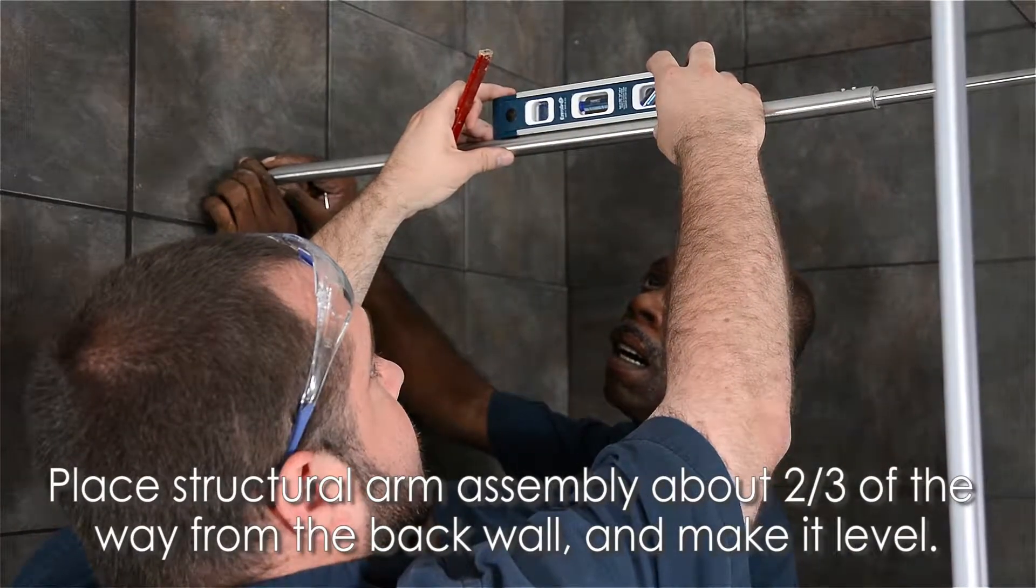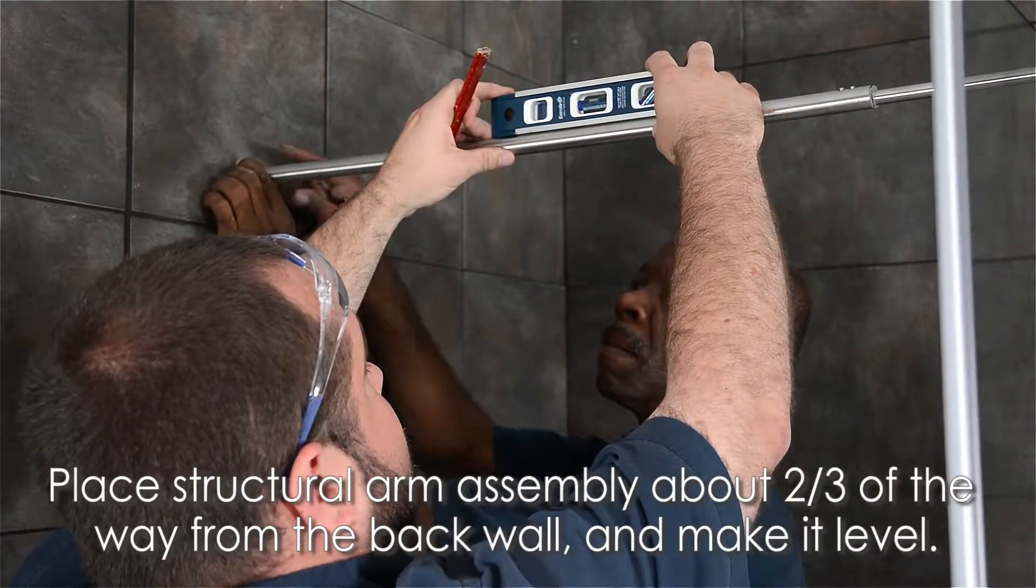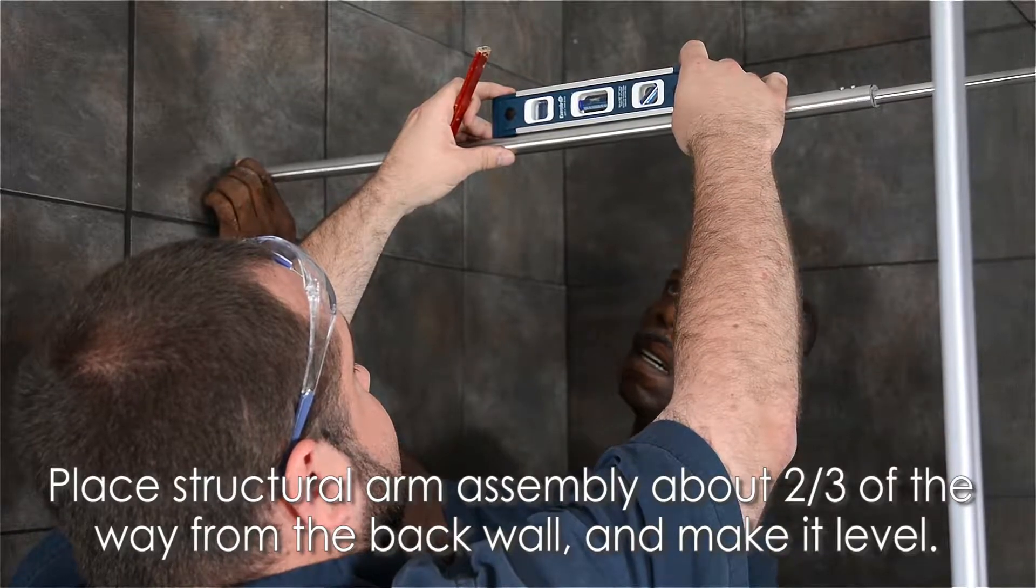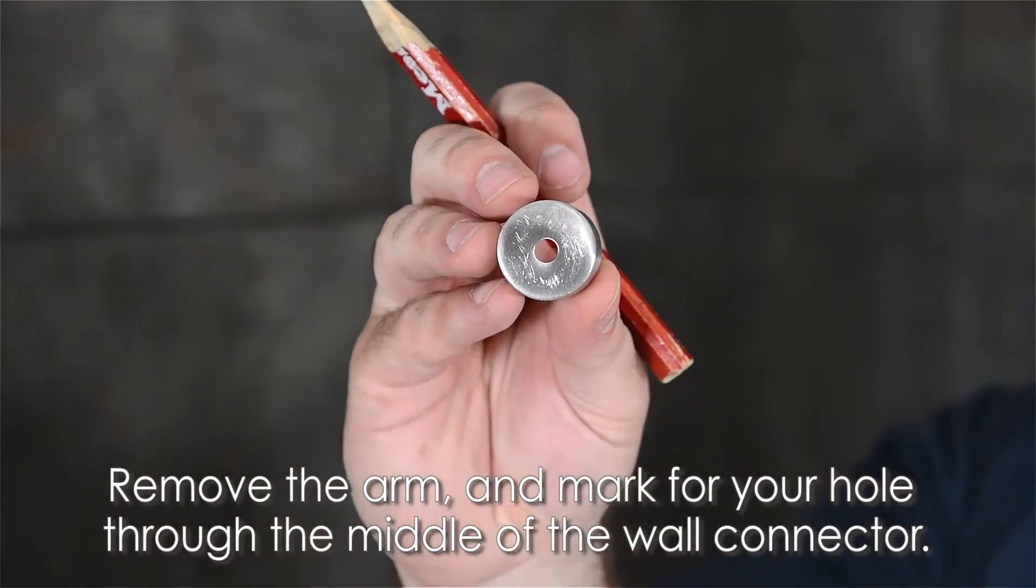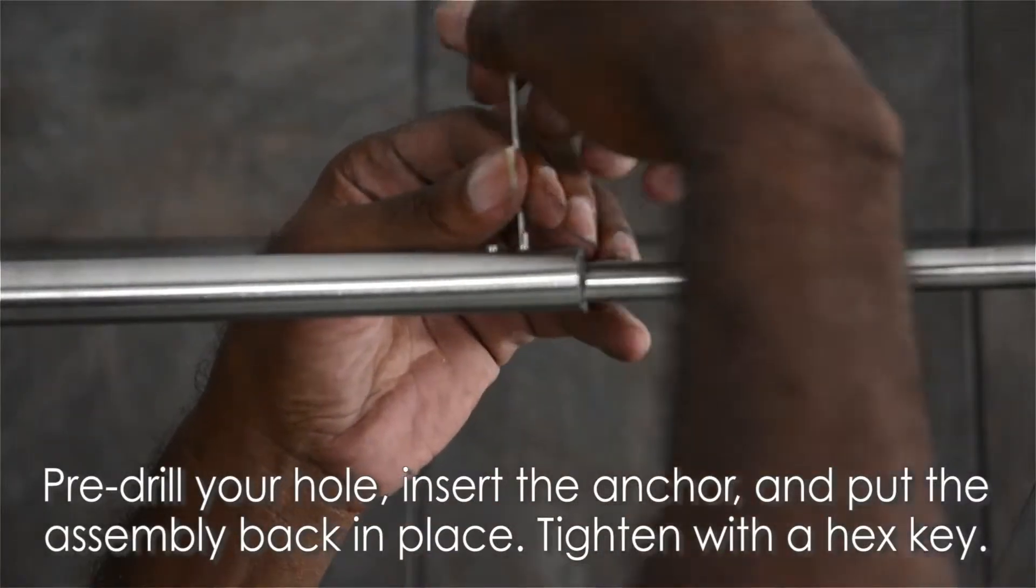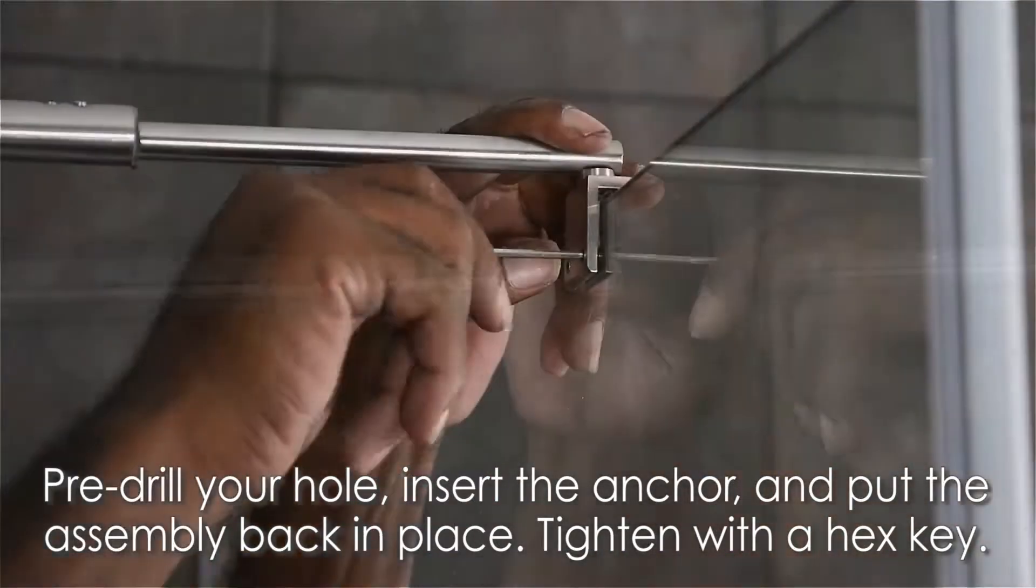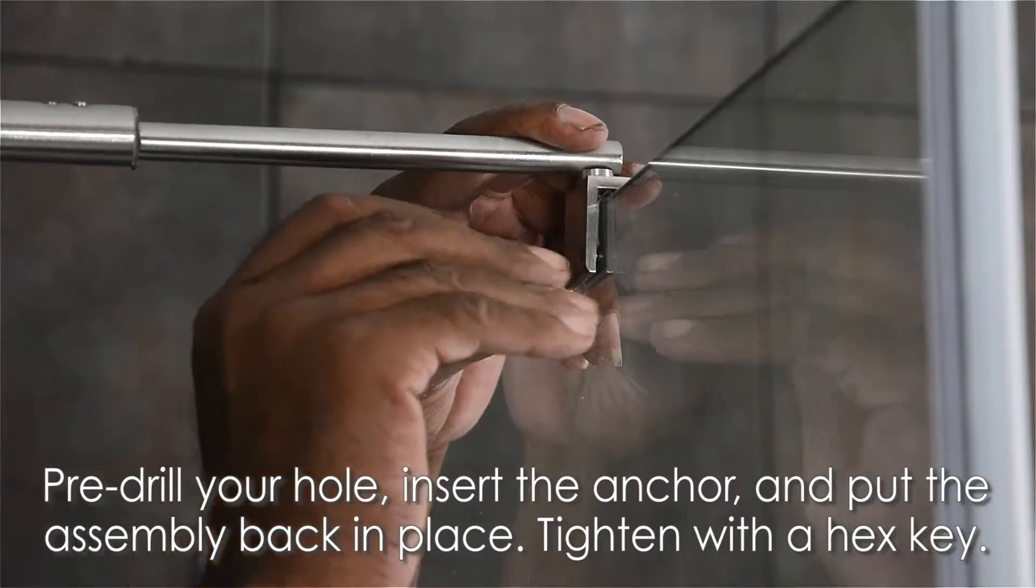Next, place your structural arm with the wall connector about two-thirds of the way from the back wall and make it level. Remove the arm and mark for your hole through the middle of the wall connector. Pre-drill your hole, then insert an anchor and put everything back in place. Tighten appropriately with a hex key.